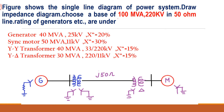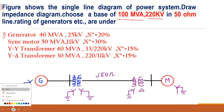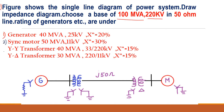Choose a base of 100 MVA, 220 kV in the 50 ohm transmission line. The rating of the generator, motor, three-phase transformer T1, three-phase transformer T2 are given. The rating of the transmission line is also given, that is 50 ohm, J50 ohm.